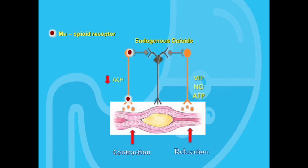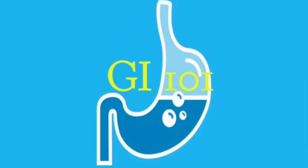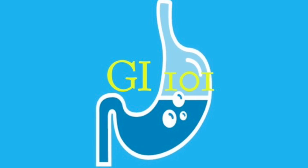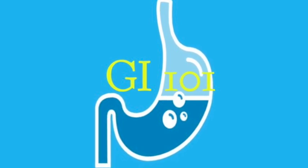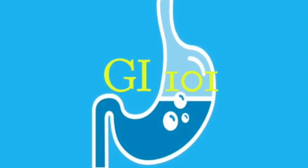The enteric nervous system is not only responsible for gut motility, but has a number of other important roles as well, such as modulating fluid secretion — for example, gastric acid production — regulating blood flow, and influencing nutrient absorption. That's it for today. Next week we can discuss how prokinetic drugs can influence the function of the enteric nervous system and improve patient symptoms. See you next time.